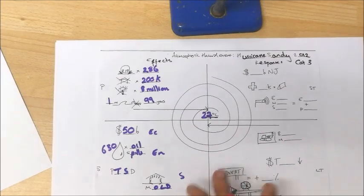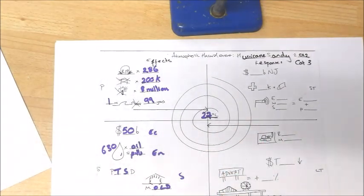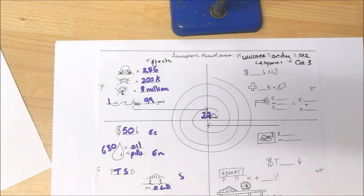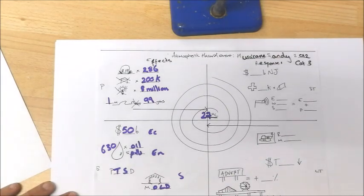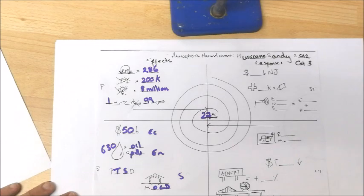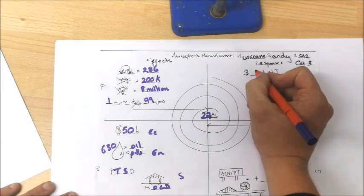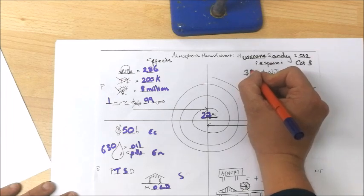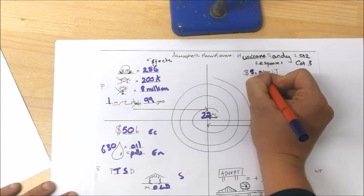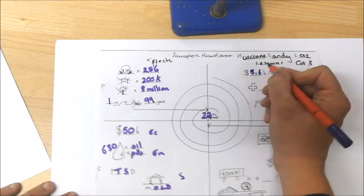Moving on then to the responses. What we've got to remember is that, unlike most times when we think about a natural disaster, and we start talking about the short-term response of international aid, that wasn't really necessary in this case. Obviously here's in New Jersey and the United States. The majority of the money donated in the immediate aftermath came from the American government and New Jersey authorities who, between them, donated over $5.6 billion.